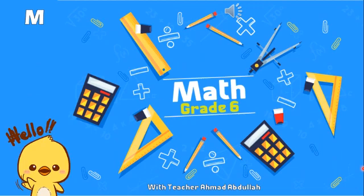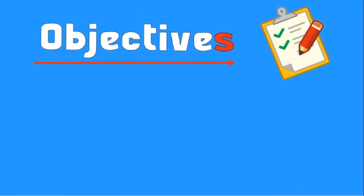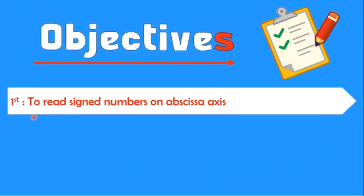Hello Grade 6 students, how are you? I hope you're doing fine today. You will continue with me, teacher Ahmad Abdullah, the lesson about signed numbers. Let's go. Our objective today, first objective is to read signed numbers on abscissa axis.